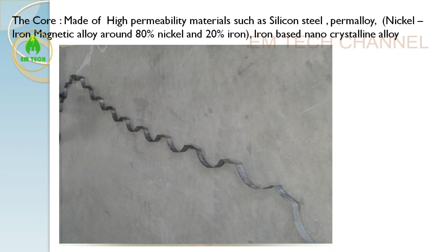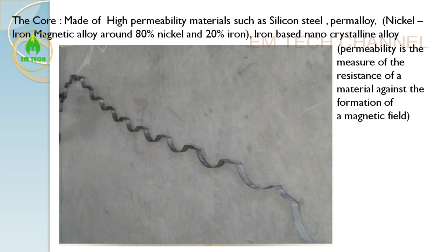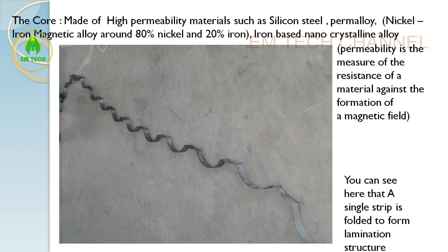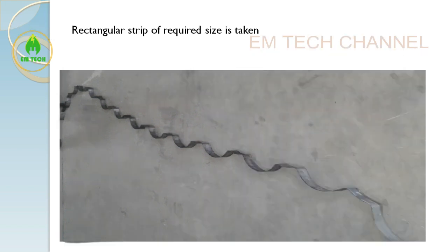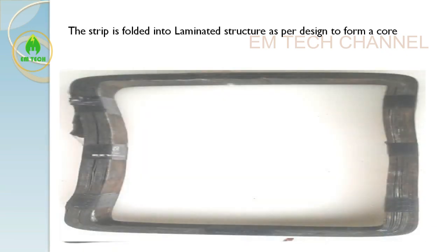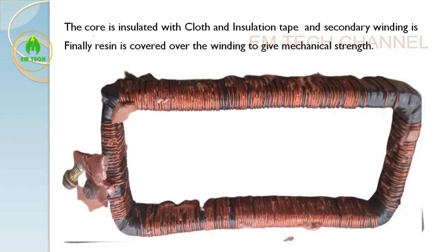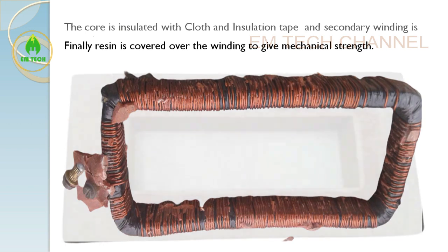The core is made of high permeability materials such as silicon steel, permalloy, and iron-based nanocrystalline alloys. Permalloy is a nickel-iron magnetic alloy of which around 80% is nickel and 20% is iron. Permeability is the resistance of a material against the formation of a magnetic field. To summarize the construction: a rectangular strip of required size is folded to make a multi-layer core, then wrapped with insulation cloth and insulation tape, then copper wire is wound over it with multiple turns as the secondary winding with terminals S1 and S2. Finally, resin is poured to form the outer shell with high mechanical strength.